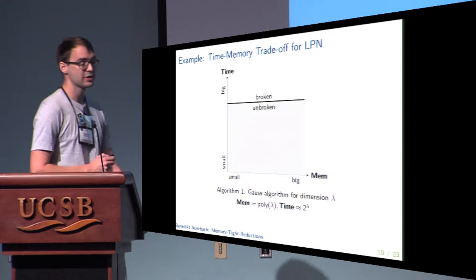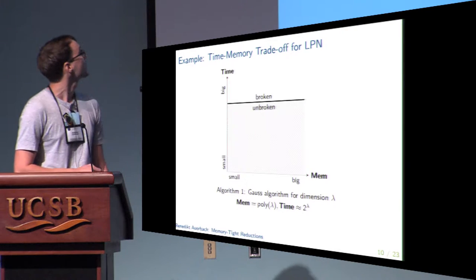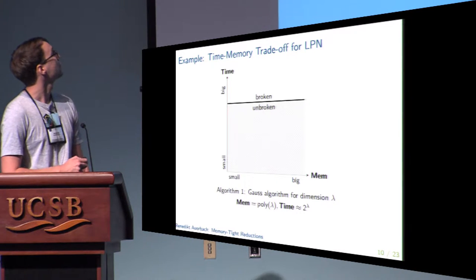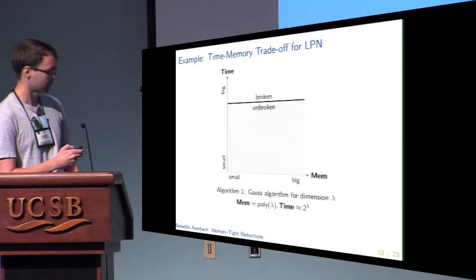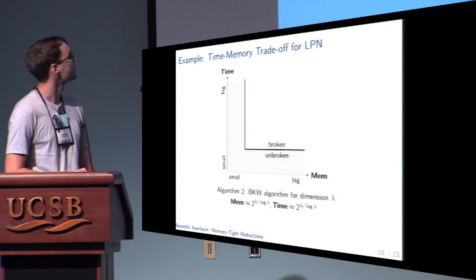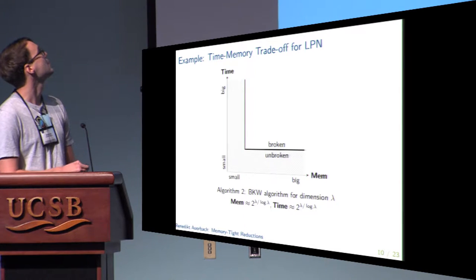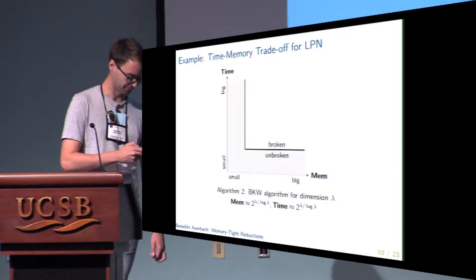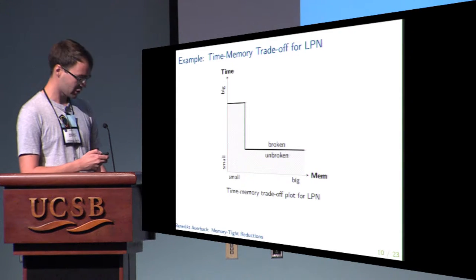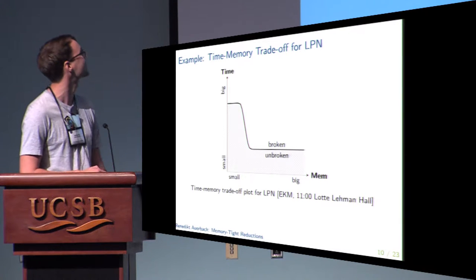For LPN this time-memory trade-off plot is essentially determined by two algorithms. The first is the Gauss algorithm, which is able to solve instances of LPN given enough running time, but memory essentially plays no role. The second is the BKW algorithm, which solves instances of LPN in considerably faster time, but at the cost of increased memory consumption. Overall the time-memory trade-off plot for LPN looks like that, and due to some recent results by Esser et al., which will also be presented here at Crypto, it looks more refined.